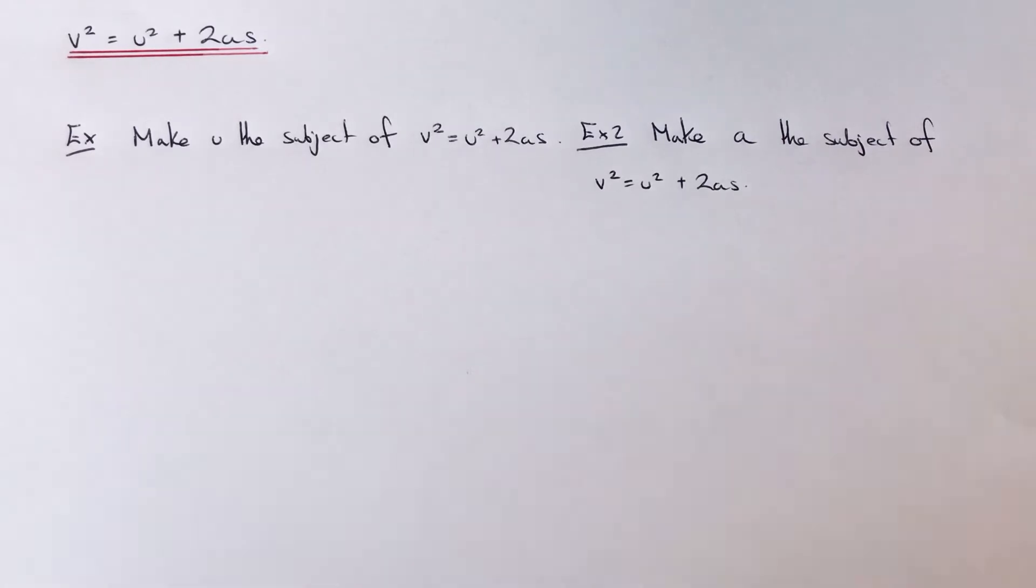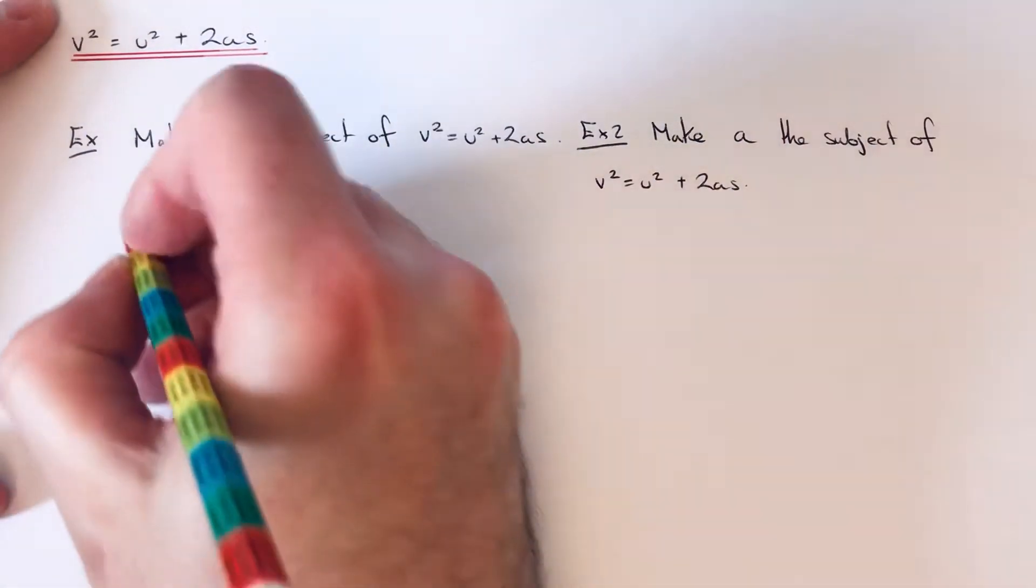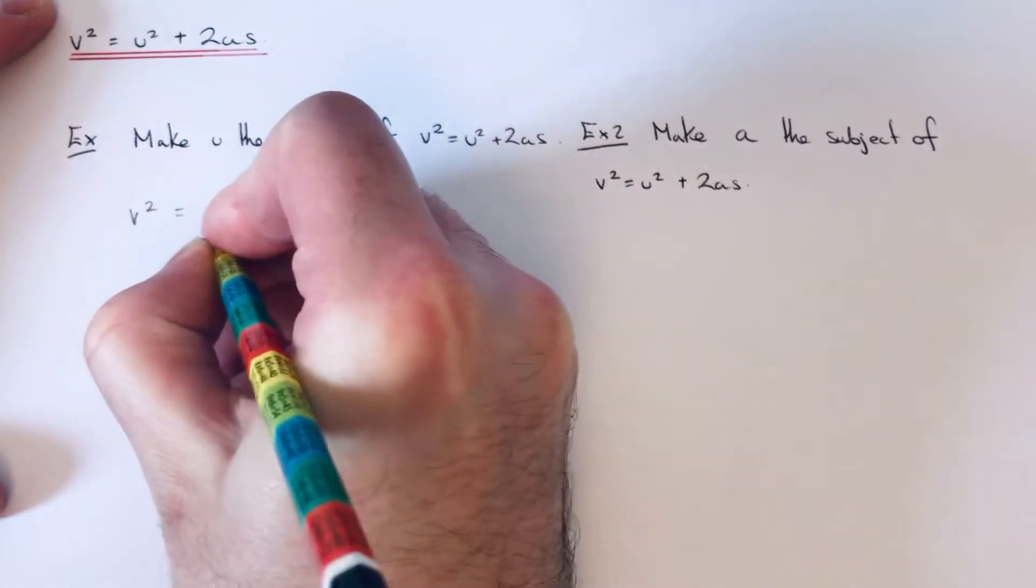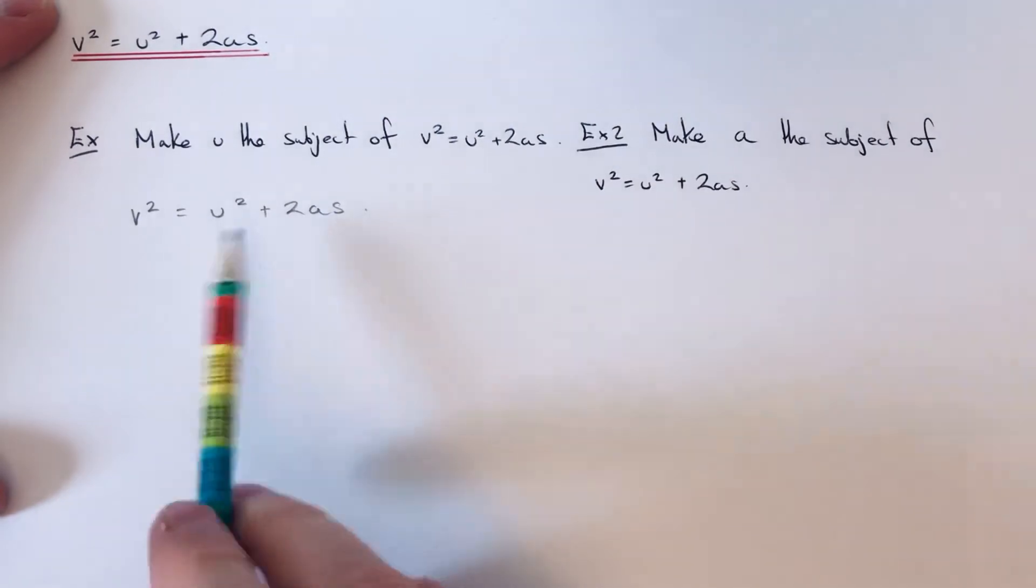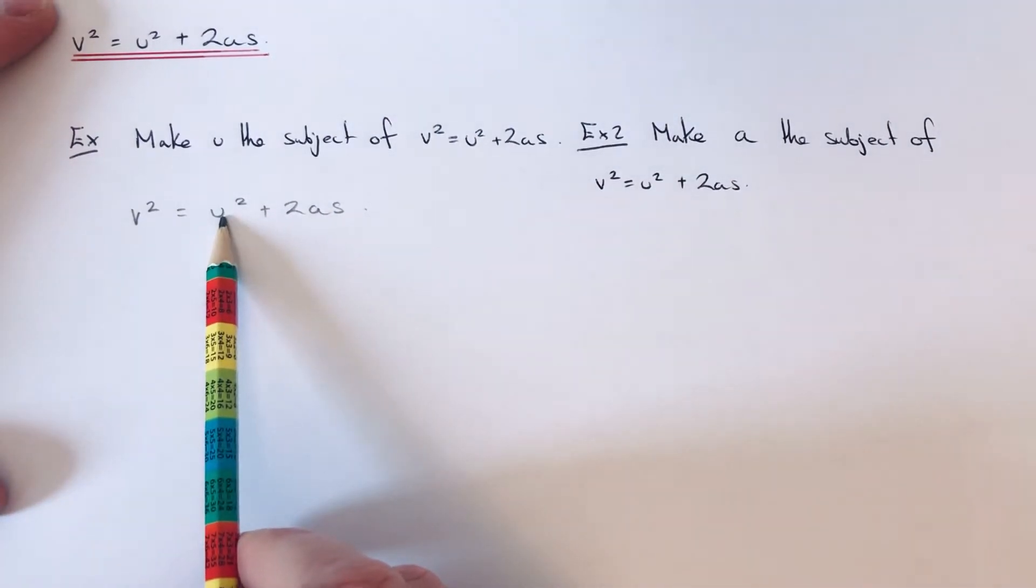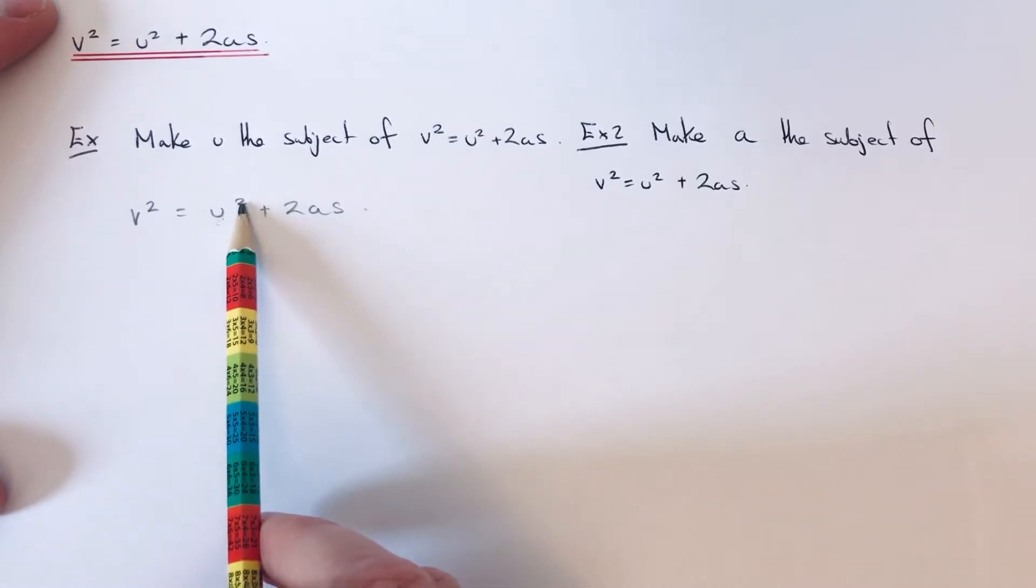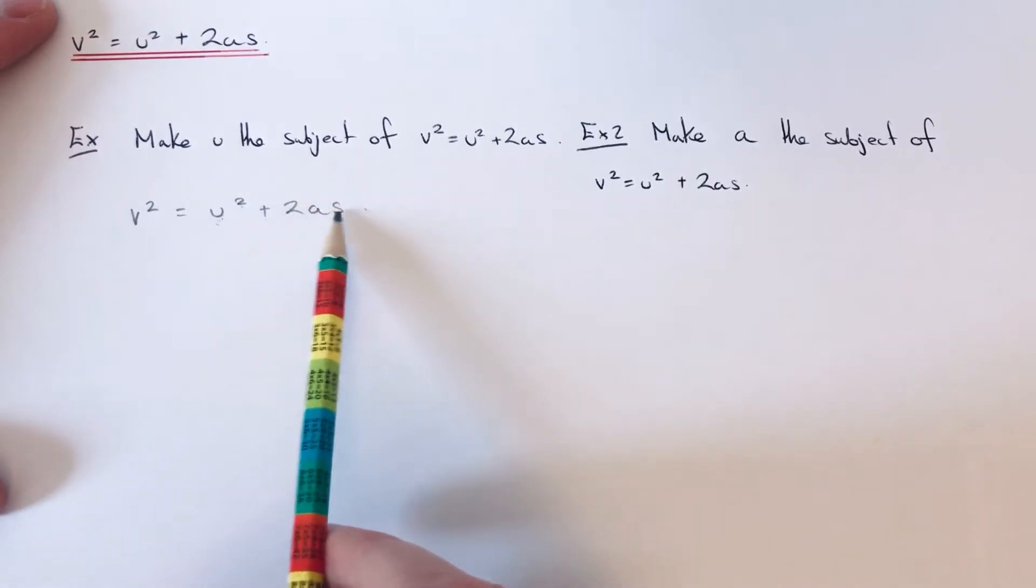So I'm just going to copy that formula down again. We're looking to make u the subject. If we look at what's happening to u on the right-hand side of the formula, first it's been squared and then we're adding on 2as.